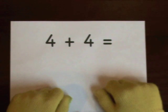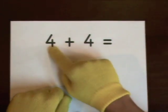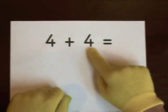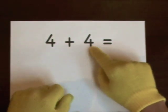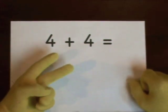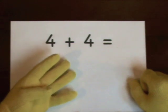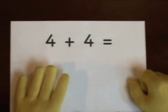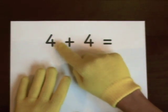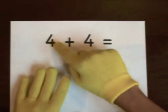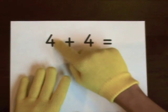Next we have 4 plus 4. Start at this 4. Do this 4 on our fingers. 1, 2, 3, 4. That's how many we'll add. 1, 2, 3, 4.